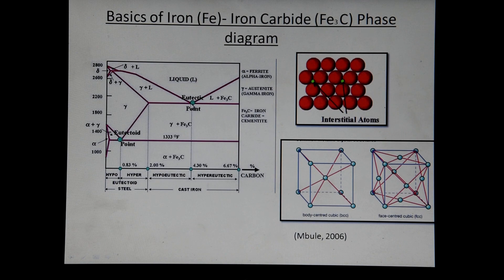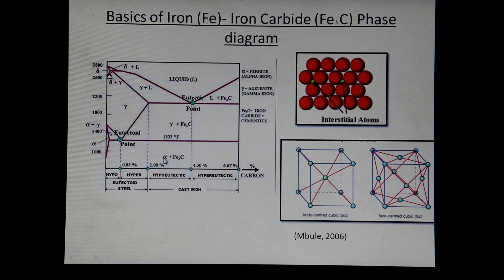This point is called the eutectic point, which we explained previously in the lead-tin phase diagram — you can watch that on my channel. The eutectic is when liquid converts directly into a two-phase solid. There is also another point called the eutectoid point, where a solid converts directly into two-phase solid solutions — specifically, gamma converting directly into alpha plus cementite, both of which are solid solutions.